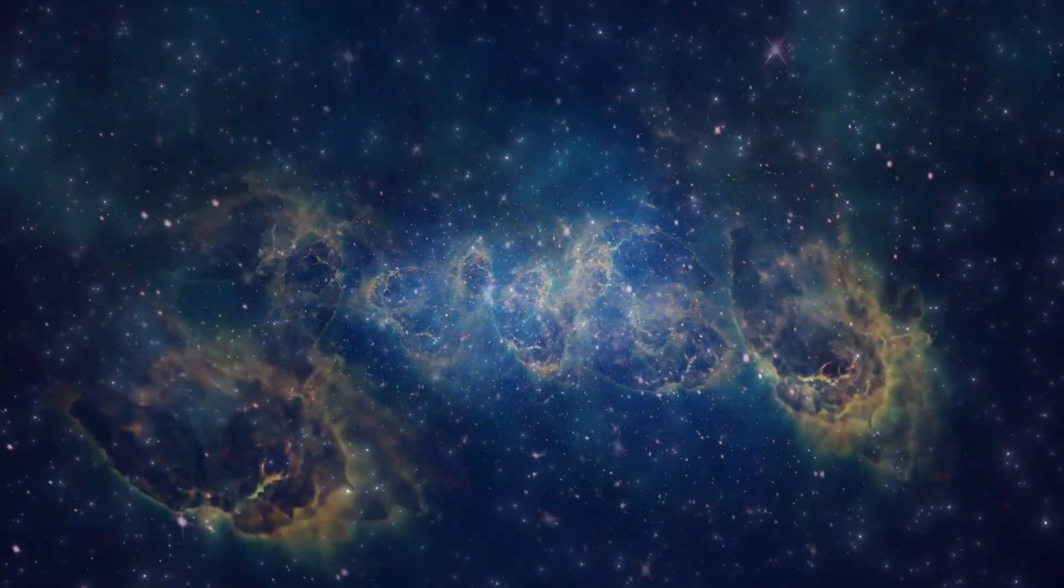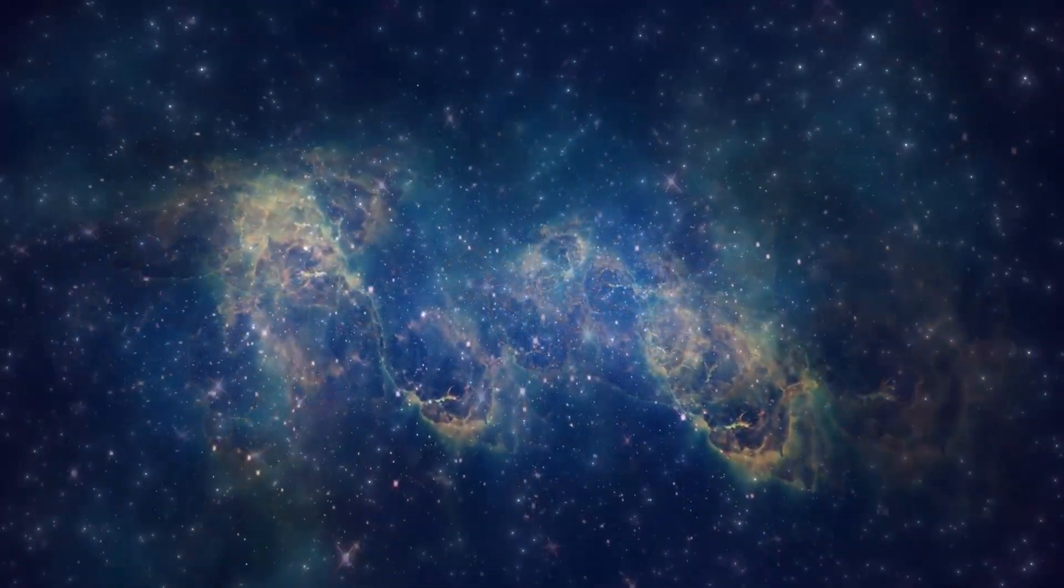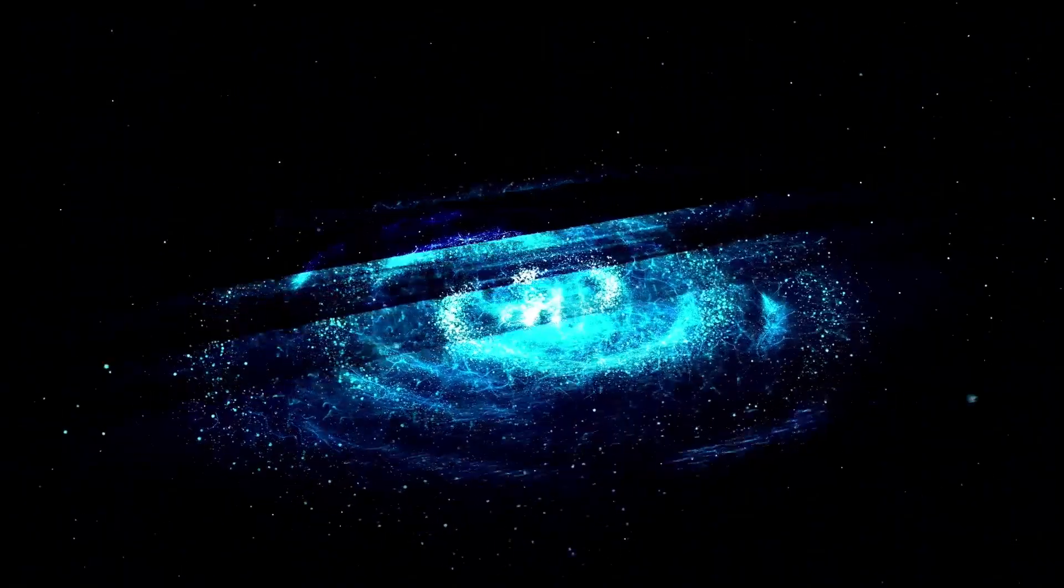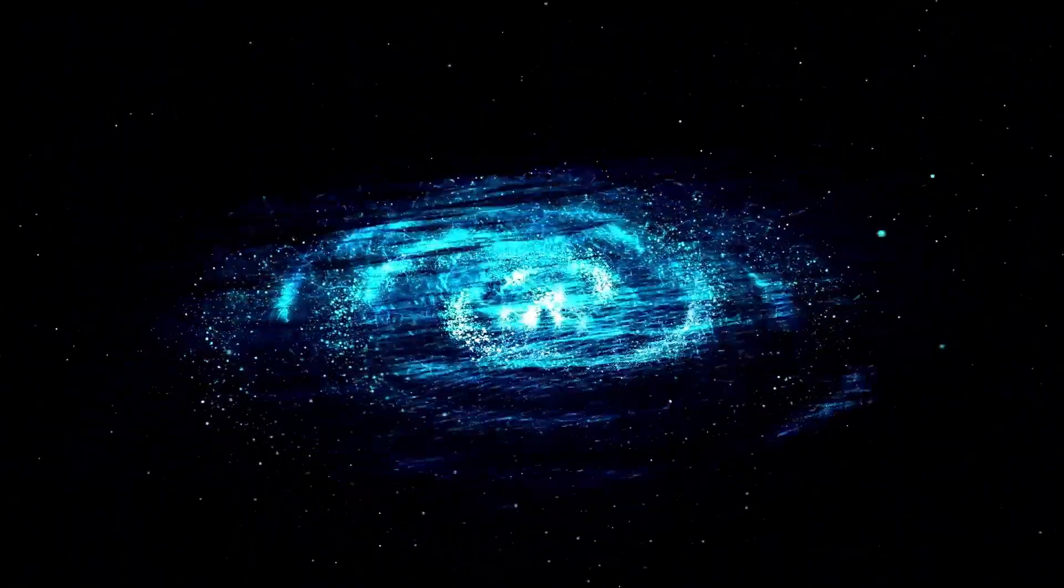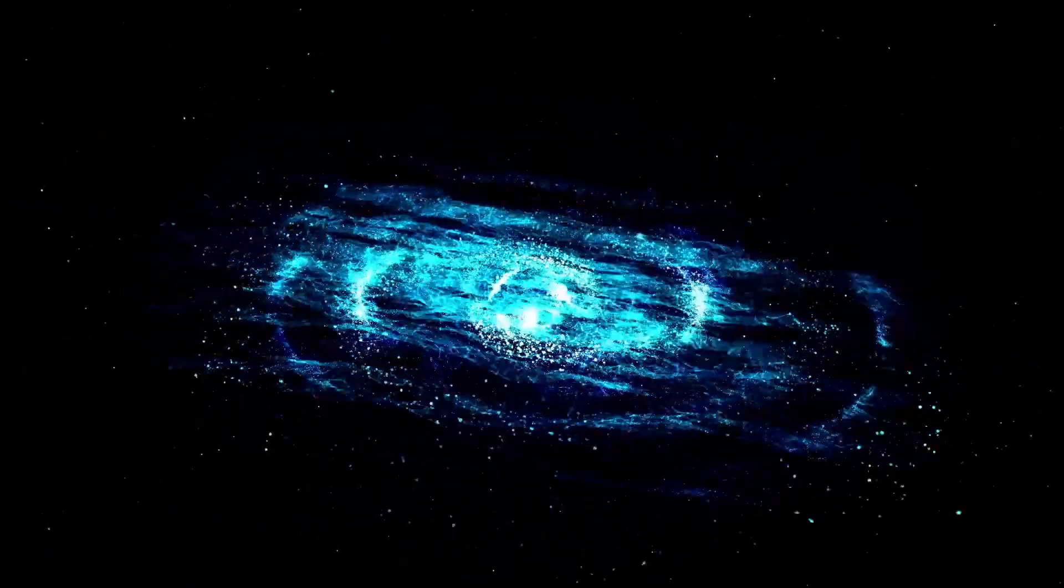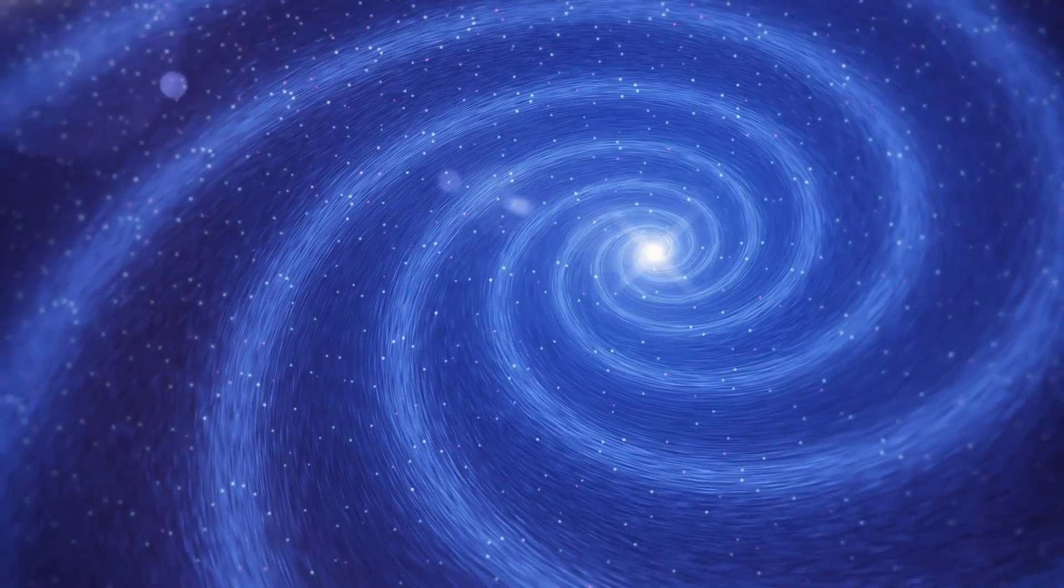General relativity introduces the idea of black holes, which are spots where gravity is super intense. Inside a black hole, the gravitational force is so powerful that nothing, not even light, can escape from it. The edge around a black hole is called the event horizon, and it's like a point of no return. Once something crosses this boundary, it gets pulled into the black hole without any chance of coming back.